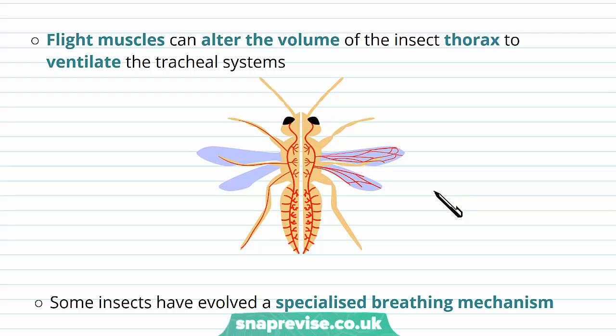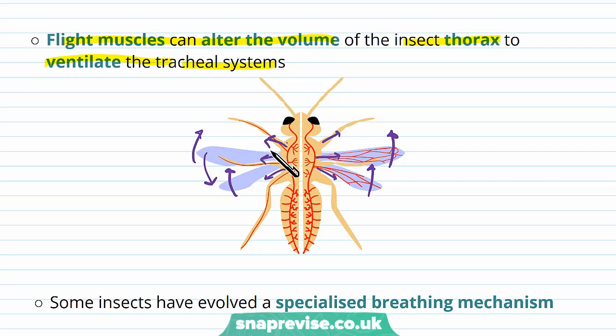Flight muscles can also alter the volume of the insect's thorax — the chest cavity — to ventilate the tracheal system. As the wings move and muscles alter the shape of the thorax, the thorax expanding reduces pressure and helps draw air in through the spiracles.